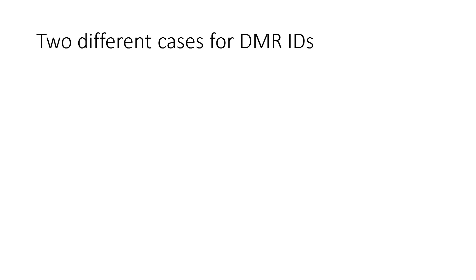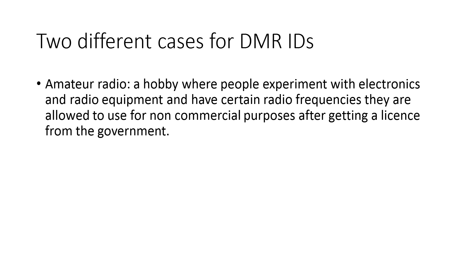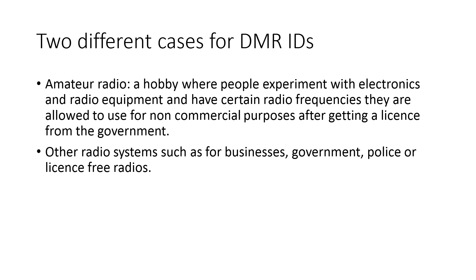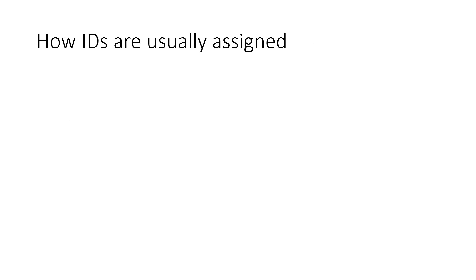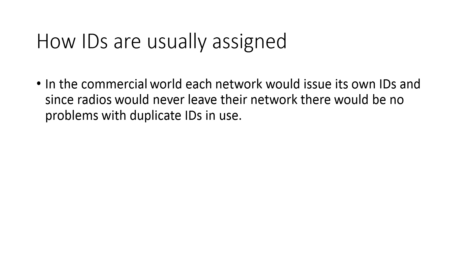There are two different cases for DMR IDs covered in this video. The first is amateur radio — a hobby where people experiment with electronics and radio equipment, using certain radio frequencies for non-commercial purposes after getting a government license. The second is all other radio systems, such as those for businesses, government, police, or license-free radios. In the commercial world, each network issues its own IDs, and since radios never leave their network there are no problems with duplicate IDs.